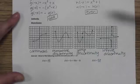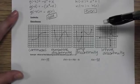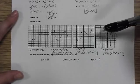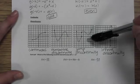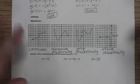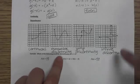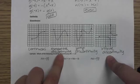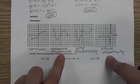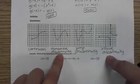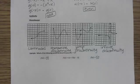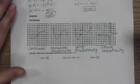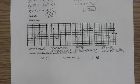The most relevant type for the current unit is jump discontinuity, because we're talking about piecewise graphs. Removable and infinite discontinuity typically come from rational graphs — we'll look at those a bit this unit but focus more on them next unit. I wanted to introduce them all at once.